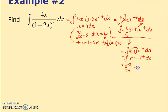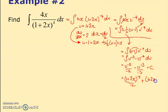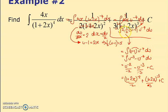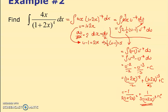Now I can integrate: raise the power and divide by the power for each term, plus a constant. Back-substituting u equals 1 plus 2x: that gives (1+2x) to the minus 2 over minus 2 plus (1+2x) to the minus 3 over 3 plus a constant. Tidying up, putting the brackets on the denominator gives the final simplified form.